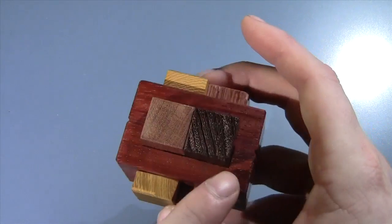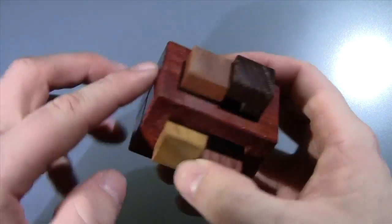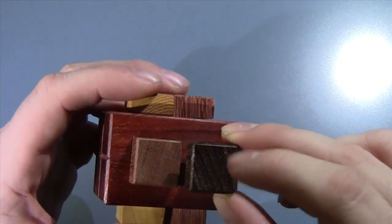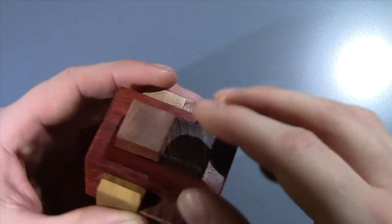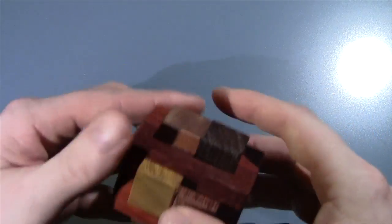Now the cage itself is made with some reddish type of wood, and then we've got a little bit of a darker wood with a nice grain to it. We've got a light brown wood, a nice yellow wood.